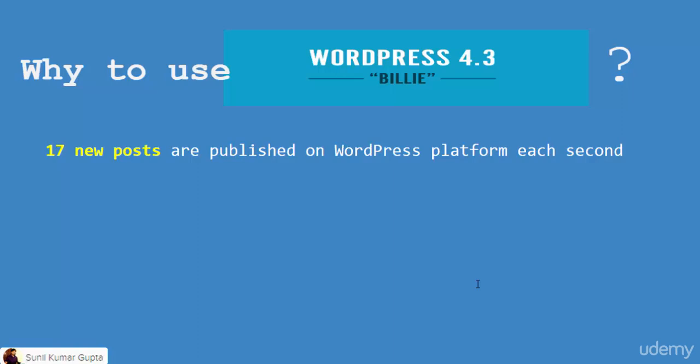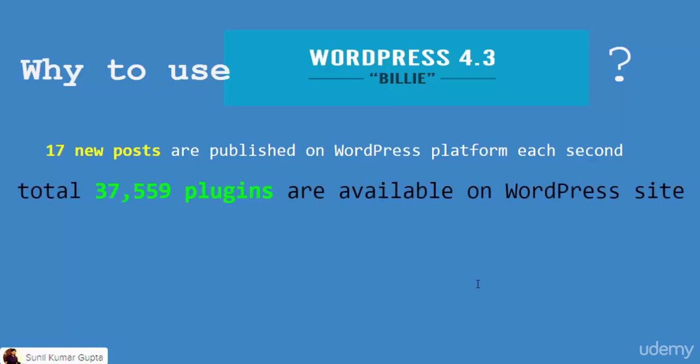That's what makes WordPress stay ahead of all other content management systems. 17 new posts are published on the WordPress platform each second — every second, 17 new posts. That says much about the popularity of WordPress. Also, 37,559 plugins are available on the WordPress website for your web development, and most of them are free. You want to integrate social media, use a plugin; want a form, use a plugin; want landing pages, use a plugin.